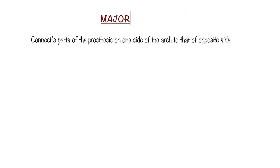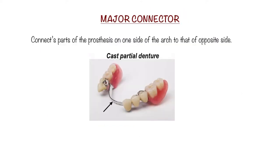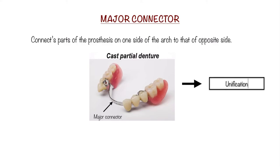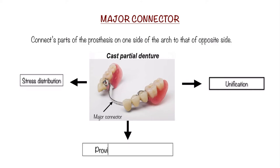The first component, major connector, connects one side of the arch to that on the opposite side, thus provides unification by acting as one unit. This unification helps in stress distribution by distributing forces between both teeth and the mucosa. It also provides cross-arch stabilization which helps resist displacement by stresses.